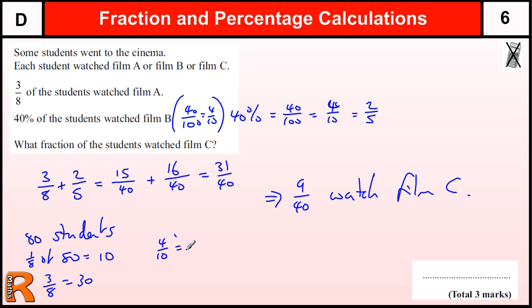Or we could, sorry, four-tenths of 80, so one-tenth is eight, four of them is going to be 32. So four-tenths is 32, three-eighths is 30, so 30 plus 32 is 62 students.